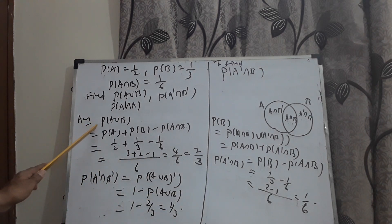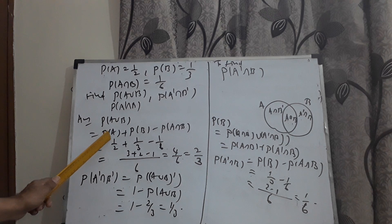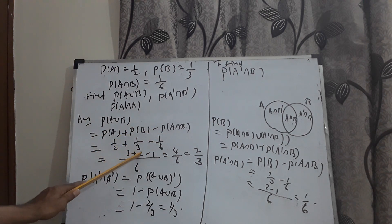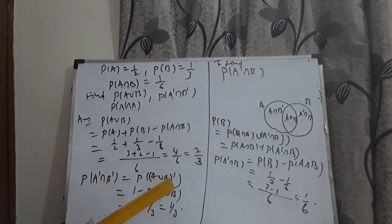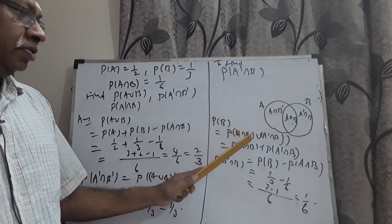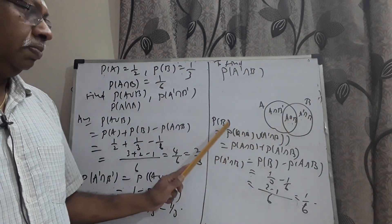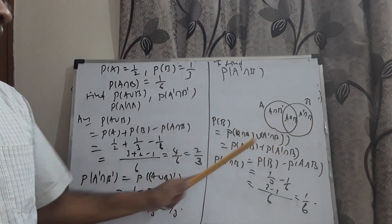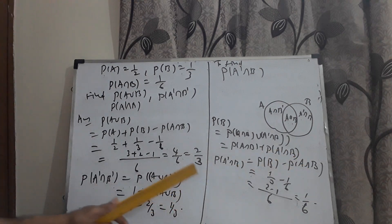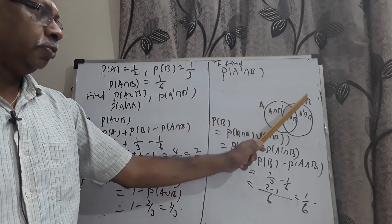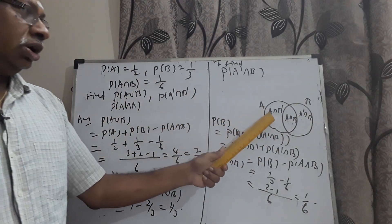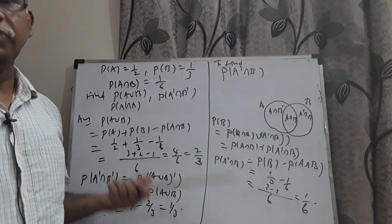Let me repeat the whole process. P(A∪B) = P(A) + P(B) − P(A∩B) = 1/2 + 1/3 − 1/6 = 4/6 = 2/3. P(A'∩B') = 1 − P(A∪B) = 1/3. From the diagram, P(A'∩B) = P(B) − P(A∩B) = 1/3 − 1/6 = 1/6. Similarly, if P(A∩B') is asked, use P(A∩B') = P(A) − P(A∩B) = 1/2 − 1/6 = 1/3.